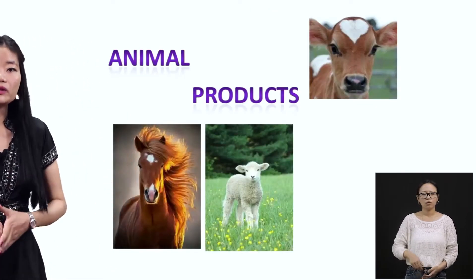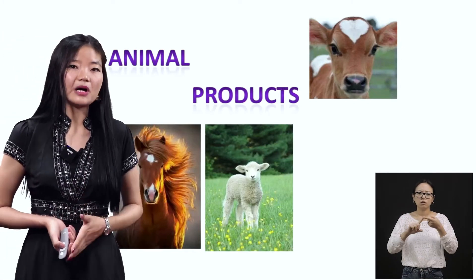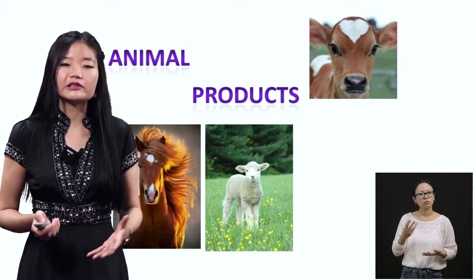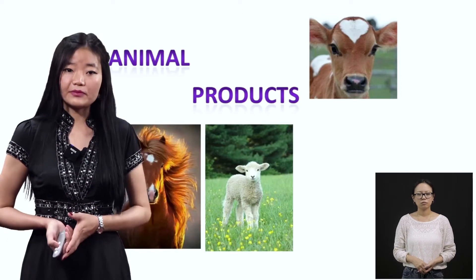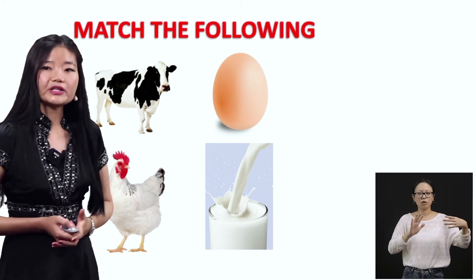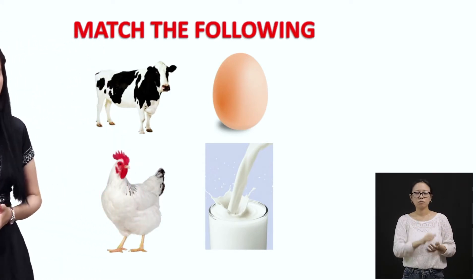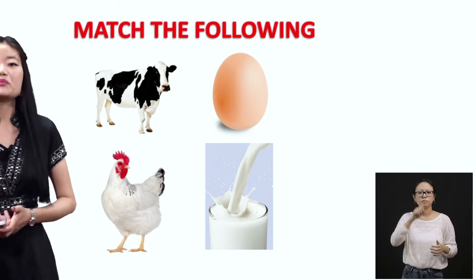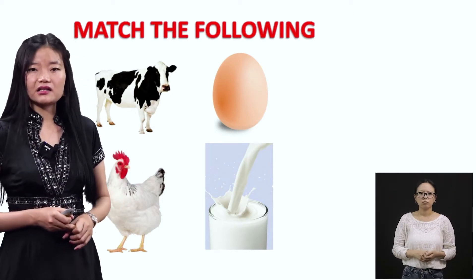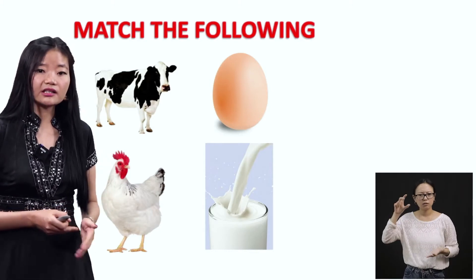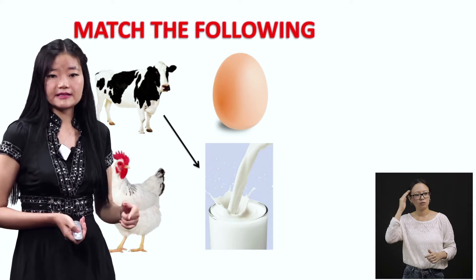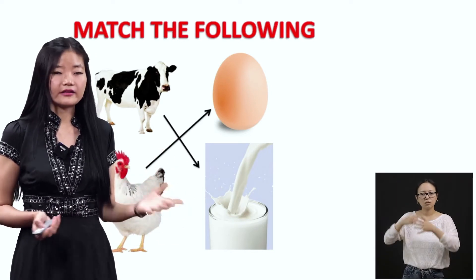The next chapter we learned right after animals and their babies was about animal products. The food and usable items that we receive from animals are termed as animal products. Here are some questions from this chapter. You need to match the following. You see four pictures on the screen: a cow, an egg, a chicken, and milk. You have to match correctly. Do you think a cow gives us an egg? Do you think a chicken gives us milk? The correct answer is: a cow gives us milk, and a chicken gives us an egg.